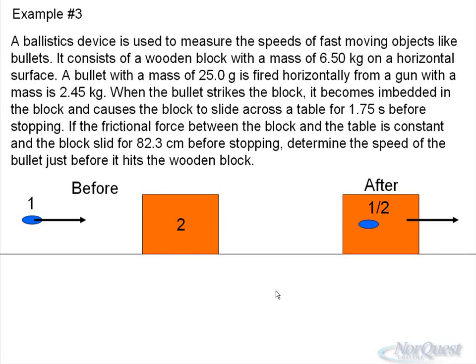We've got a ballistics device in this example. It's used to measure the speeds of fast-moving objects like bullets. It consists of a wooden block with a mass of 6.50 kilograms on a horizontal surface. A bullet with a mass of 25 grams is fired horizontally from a gun with a mass of 2.45 kilograms.